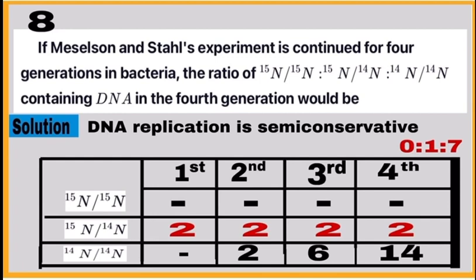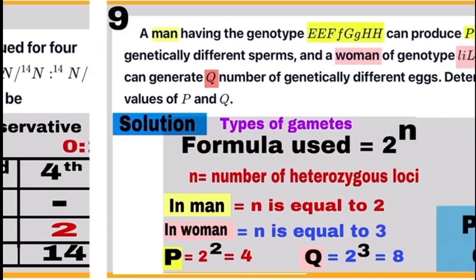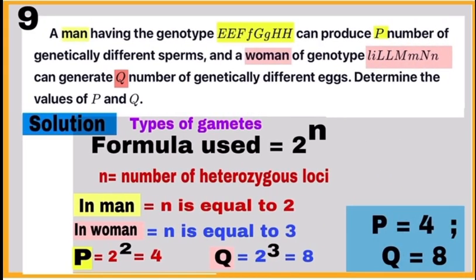Question number 9: Calculate different types of gametes formed in two given cases. For this, use the formula 2 to the power n, where n equals the number of heterozygous loci. In man, n equals 2, while in woman, n equals 3. So the value of P equals 4, and Q equals 8.